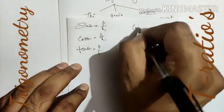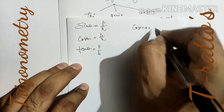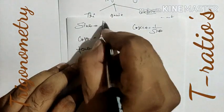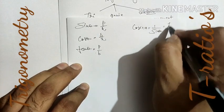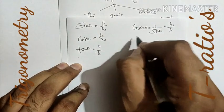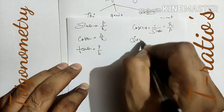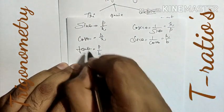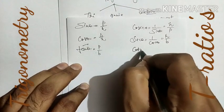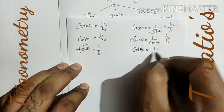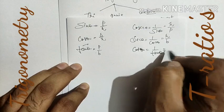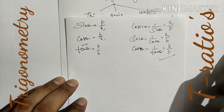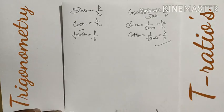The other three ratios are reciprocals of the first three. Cosecant θ is the reciprocal of sine θ, so it becomes H/P. Secant θ is the reciprocal of cosine θ, giving H/B. Cotangent θ is the reciprocal of tangent θ, giving B/P. This way we can learn all six trigonometric ratios.